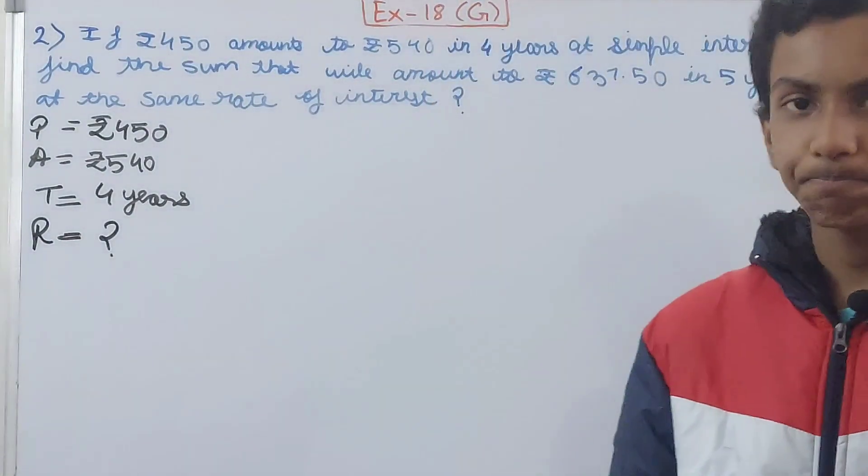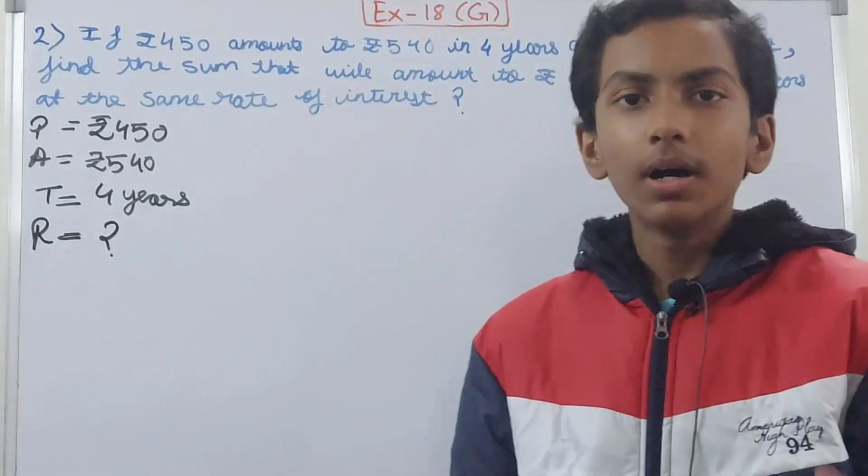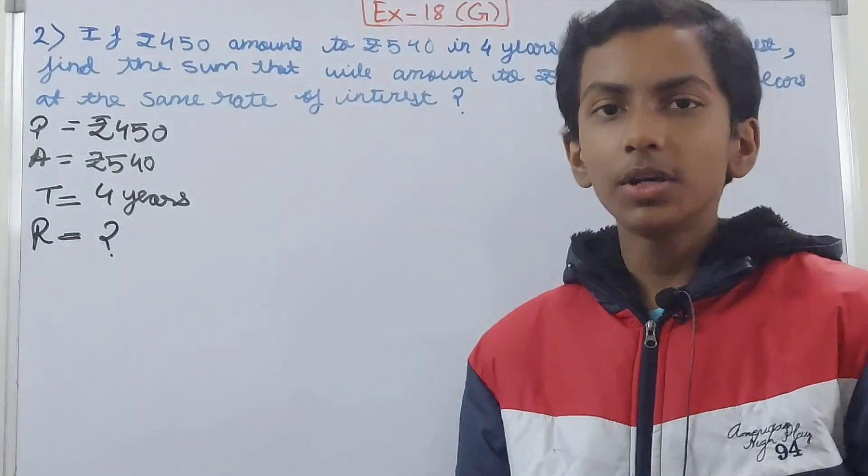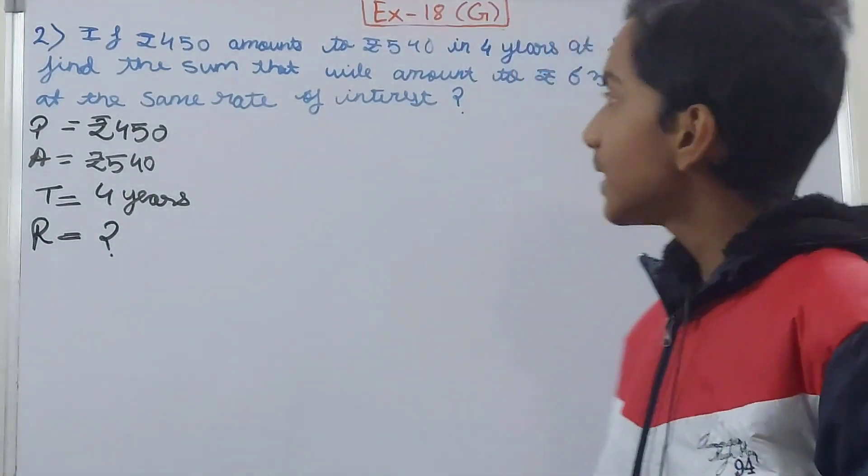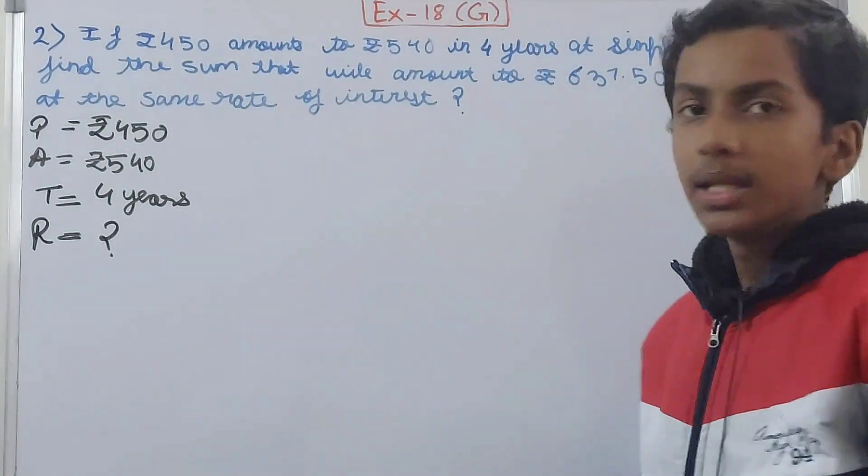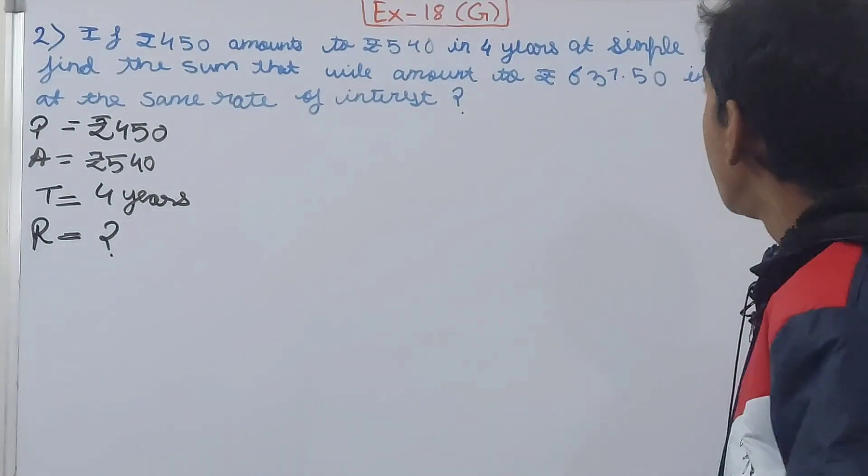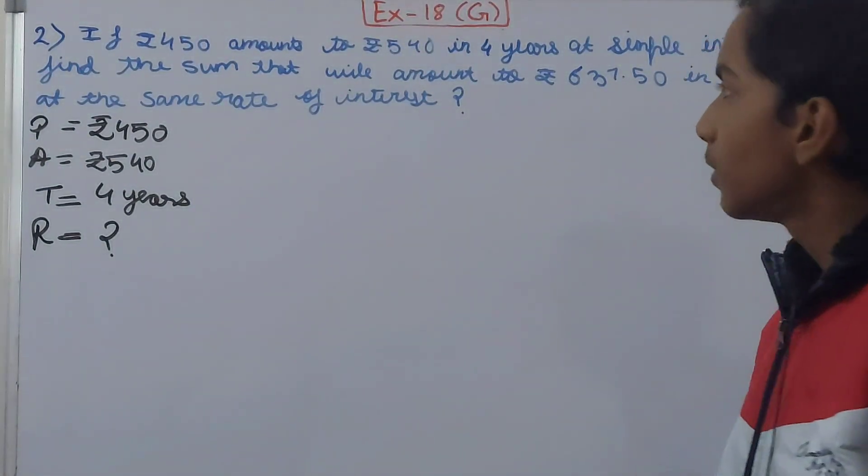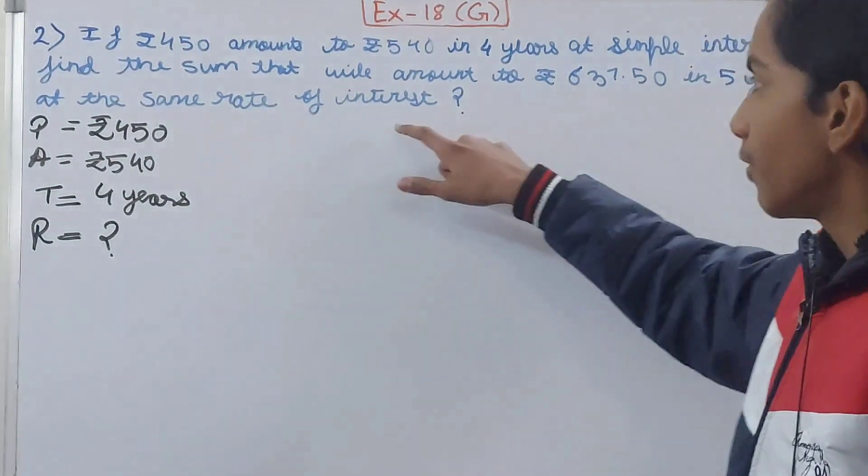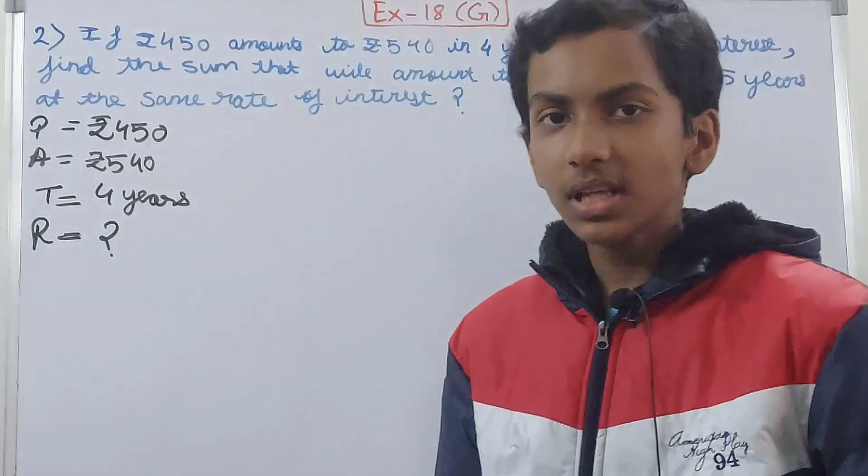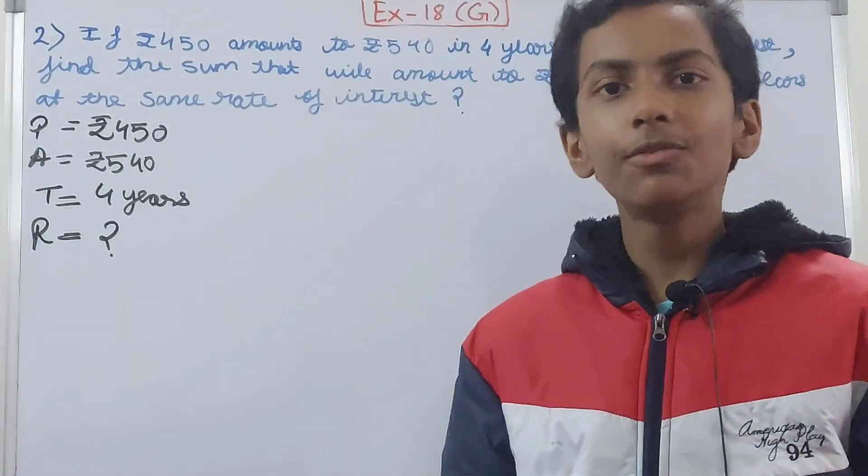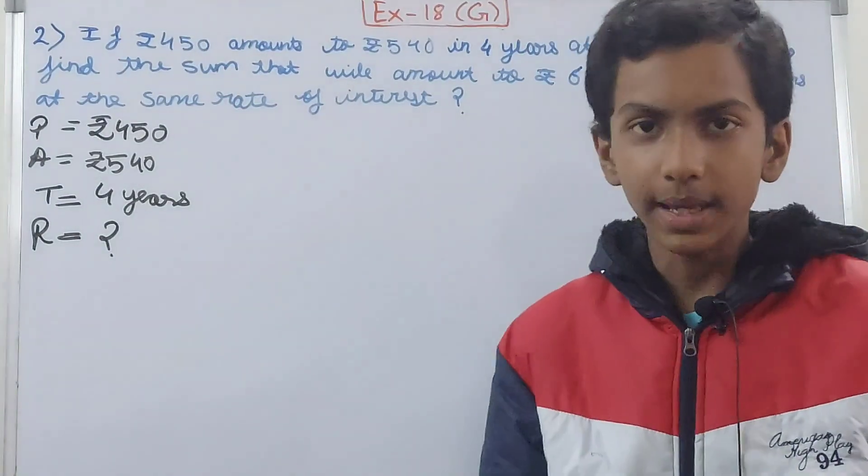This is what we have to find. In these types of questions we must know the rate first. Why? Because it is asking us to find the sum that will amount to ₹637.50 in 5 years at the same rate of interest. So we cannot find the sum until we know all three quantities: principal, rate, and time.